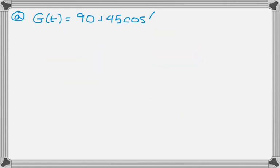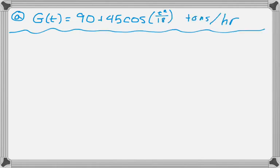But we're told that G of T is 90 plus 45 cosine of T squared over 18, and then that's in tons per hour. And it's the rate at which unprocessed gravel is arriving at a gravel processing plant.